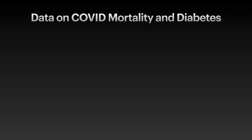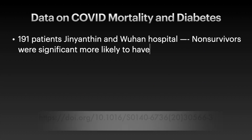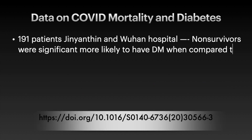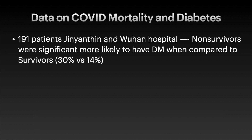So what are the available data till date? The first one comes from Wuhan City, China, where 191 patients were taken from Jinyintan Hospital and Wuhan Hospital. In this study, they found that non-survivors were significantly more likely to have diabetes when compared to survivors — 30% among non-survivors and 14% among survivors.